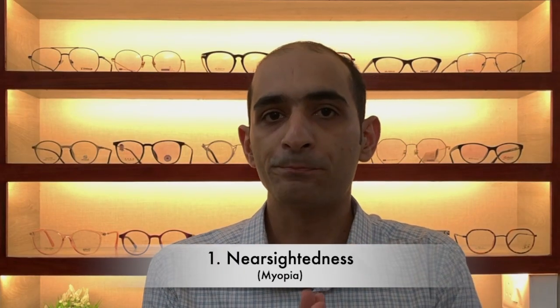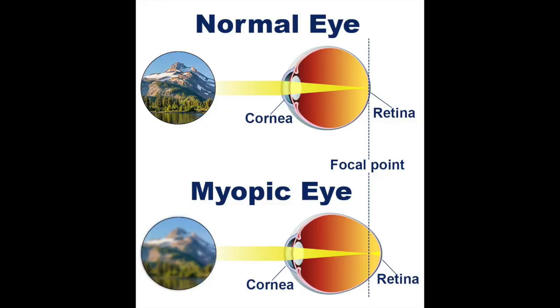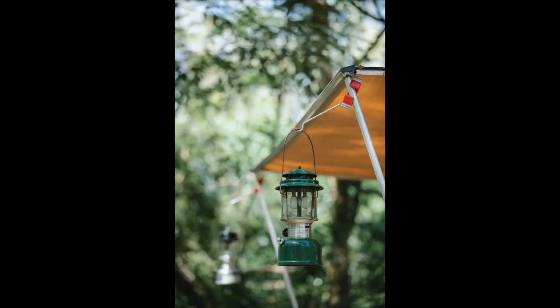There are several common vision problems that can affect young people. These include nearsightedness or myopia. This condition occurs when the eye is longer than normal or the cornea is too curved, causing light to focus in front of the retina instead of on it. As a result, distant objects appear blurry while close objects appear clear.